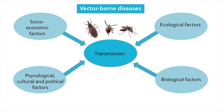What these diseases have in common is that their transmission involves different determinants that can be divided into different dimensions. You have the ecological factors, which relate to the density, distribution, and interaction of the vectors and the hosts — and hosts could be any animal that can be infected, including humans. Then you have the biological factors related to the characteristics and duration of their life cycles, and traits such as infectivity. On the other side, there are socioeconomic, psychological, cultural, and political factors included in the human dimension of the disease.